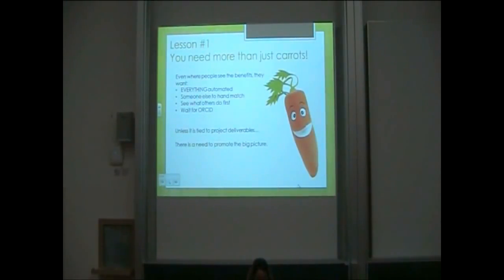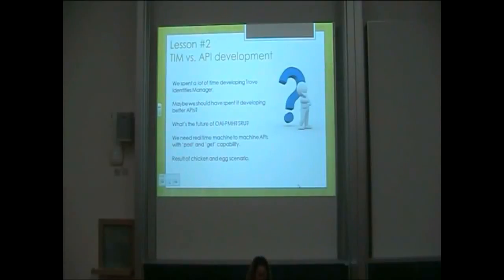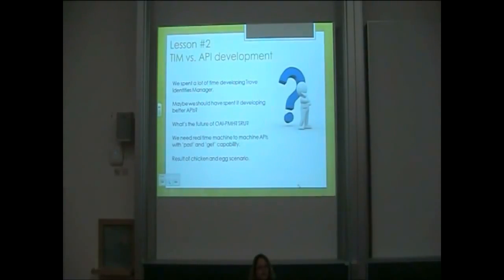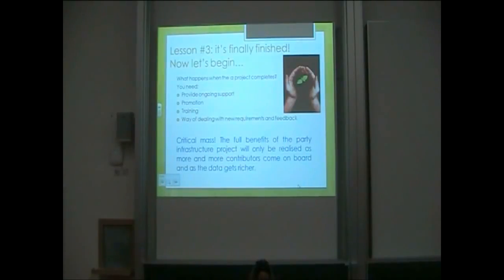Lessons learned. First, you need more than just carrots. We didn't have publisher buy-in, and that would have guaranteed people to use the service. Without that, you actually need sticks — something that ties people into the project deliverables. People have to invest time into this, so there's a bit of a sell involved, and that wasn't part of the project funding. Second, we spent a lot of time developing the Trove Identities Manager for hand-matching and author disambiguation, but we probably should have put more effort into developing a better API. People can get data through OAI-PMH and an SRU interface, but we really need a quick find-and-get functionality in the API. It's finally finished — now let's begin. People are using it, so there's a need for ongoing support, training, and that's where the effort needs to go now.